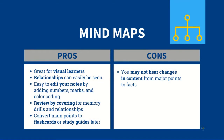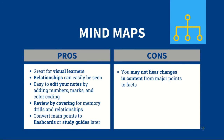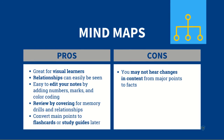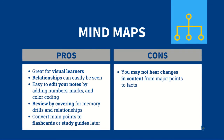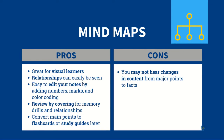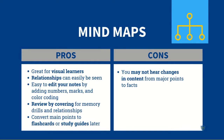Mind maps are great for visual learners. The relationships between info can be clearly seen. It's easy to edit notes by adding numbers, marks, and color coding. Review your notes by covering up sections and reciting from memory. Kinesthetic learners can convert main points later onto flashcards or a study guide.